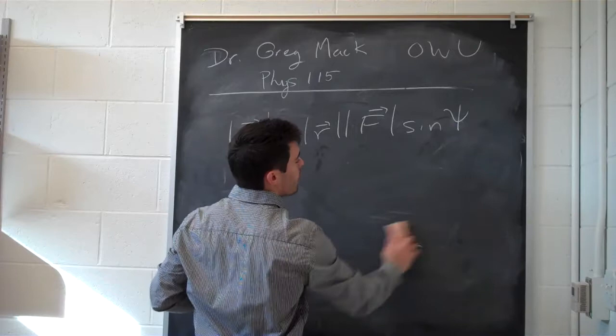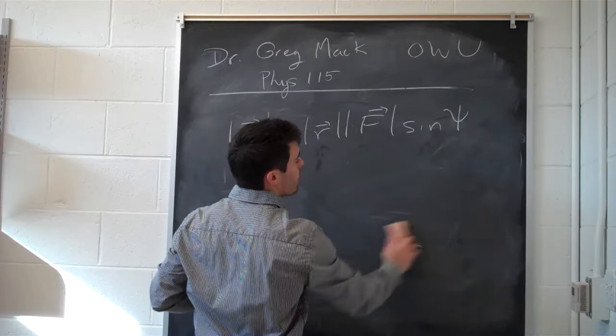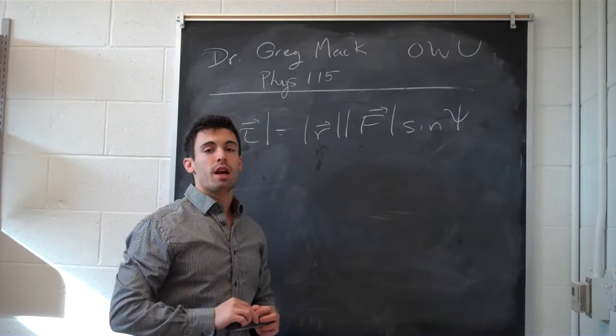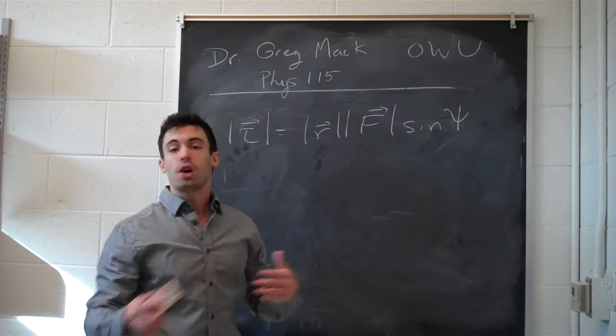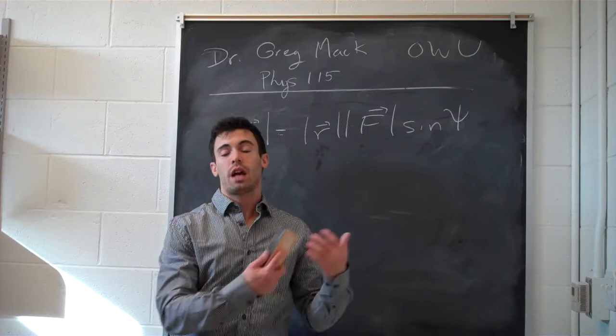Now we have to talk about the direction of torque. If the torque causes the object to rotate counterclockwise, that torque is positive. If the object moves in a clockwise direction, the torque is negative. This is just like the sign convention for angular acceleration: positive alpha is counterclockwise motion, and negative alpha is clockwise.